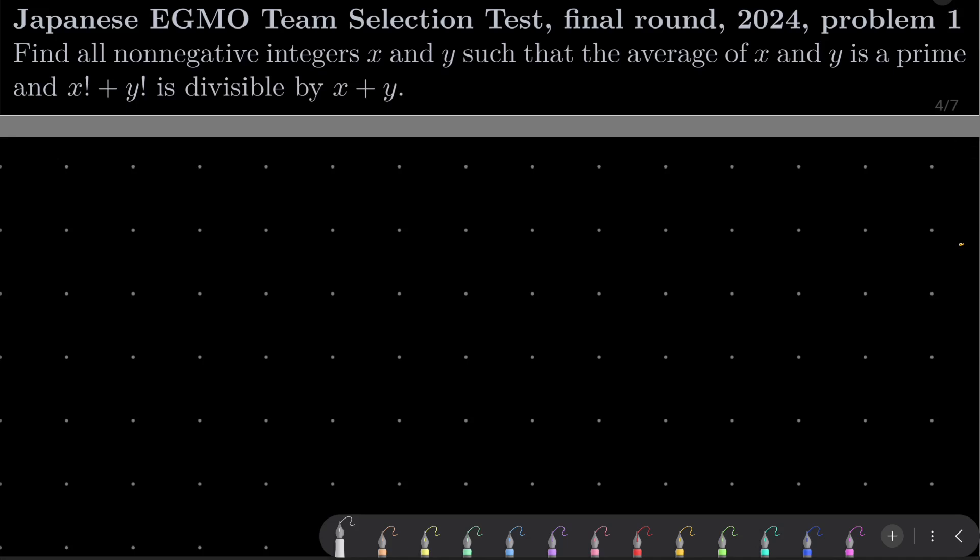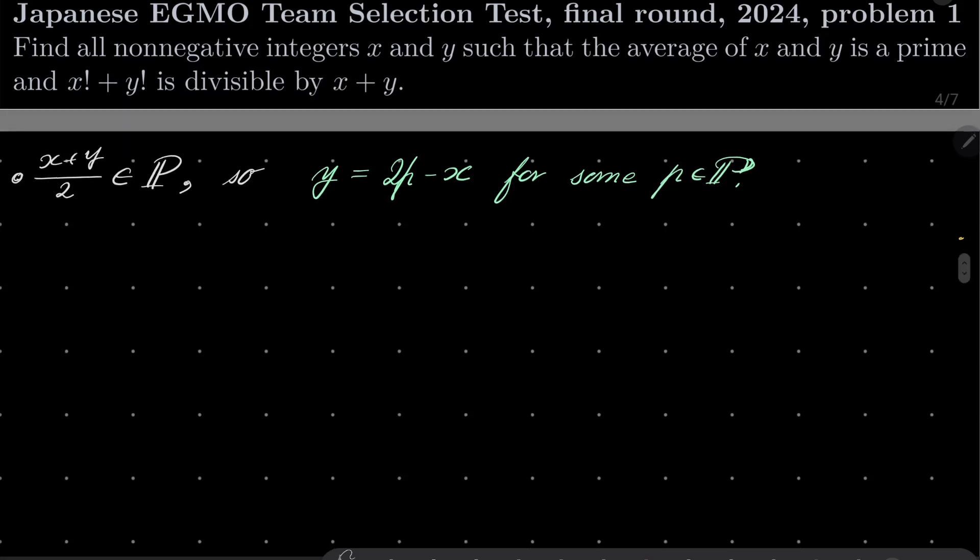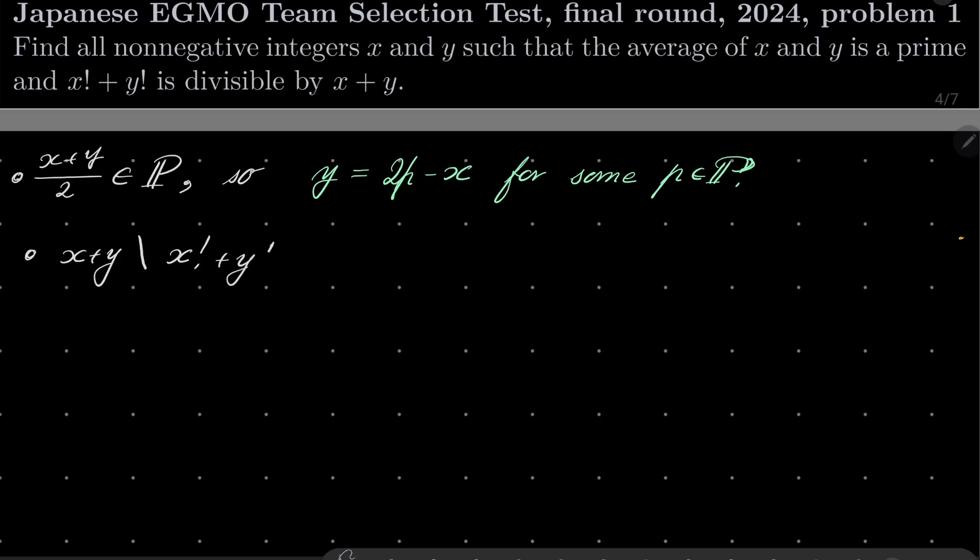All right, so first we are assuming that x plus y over 2 is a prime, so it can be written that y equals 2 times p minus x for some prime number p. And now let's tackle our second condition. Notice that x plus y divides x factorial plus y factorial if and only if 2 times p divides x factorial plus 2p minus x factorial. And in particular, p itself must divide x factorial plus 2p minus x factorial.